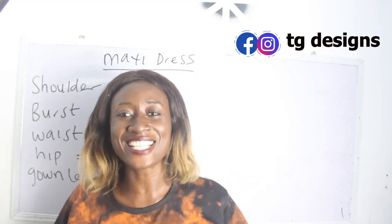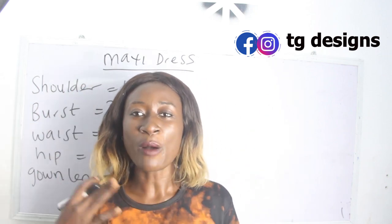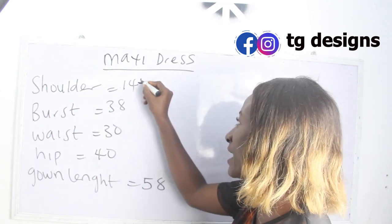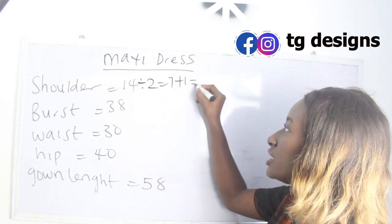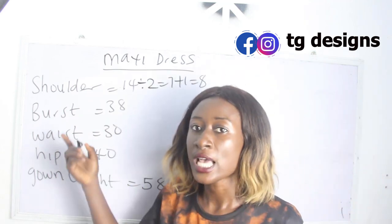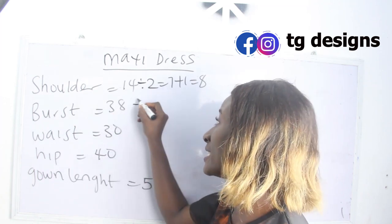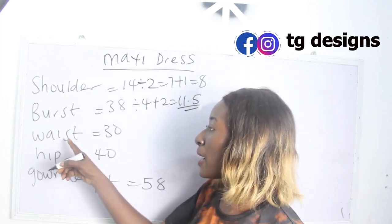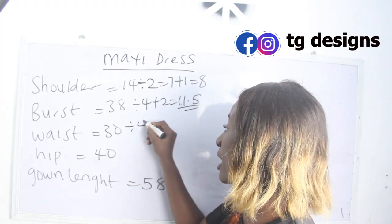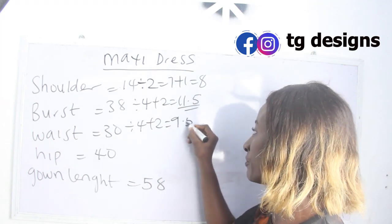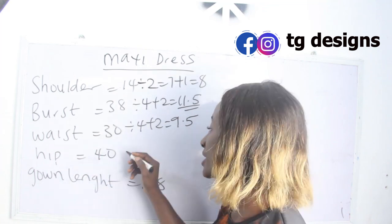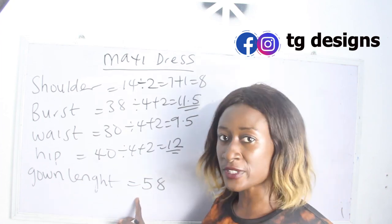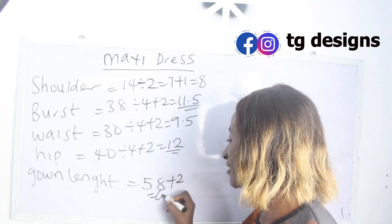All the details are going to be in the description box below. So we have our shoulder measurements which is 14, so 14 divided by 2 we have 7, plus 1 inch for seam allowance, we have 8 inches. Our bust is 38, so 38 divided by 4 plus 2 we have 11.5. Our waist is 30, 30 divided by 4 plus 2 we have 9.5. Our hip is 40 inches, 40 divided by 4 plus 2 we have 12 inches. Our gown length is 58, 58 plus 2 we have 60 inches.